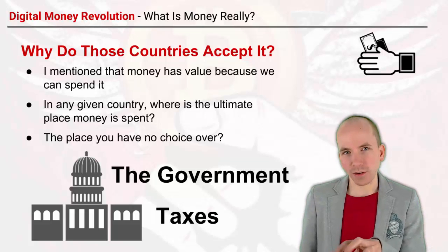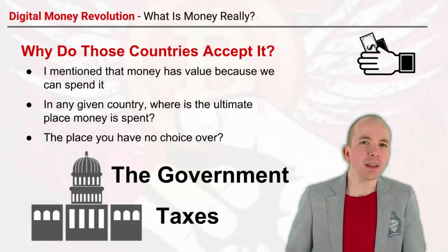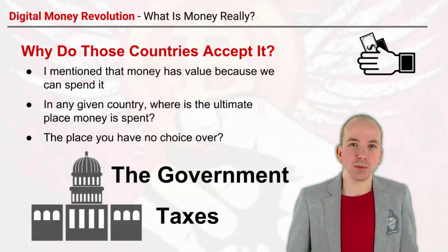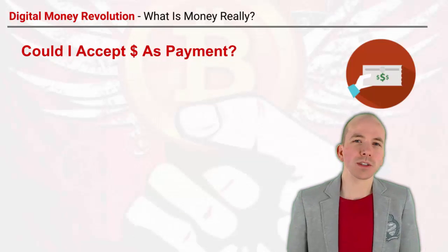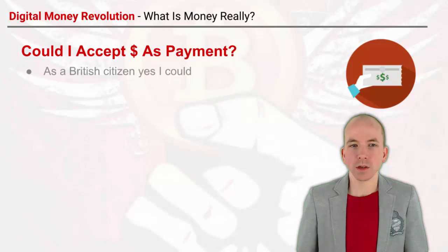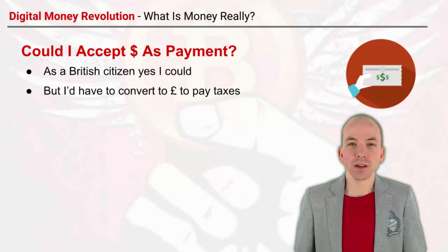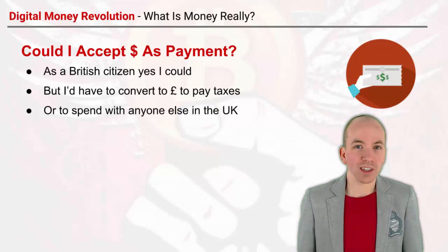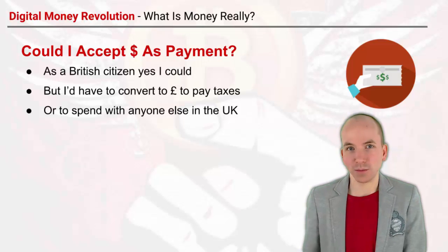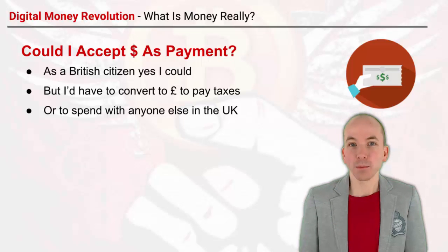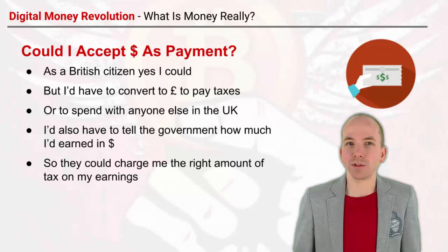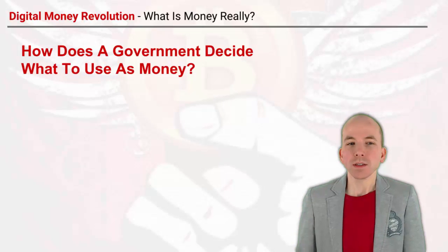Governments in each country have a stranglehold on what can be used as currency. They'll allow people to barter and trade in anything, but when it comes to paying taxes you have to have the national currency. As a British citizen, I could accept dollars as payment, but I'd have to convert some to pounds when it came time to pay taxes, or find someone else in the UK who'd accept dollars. If I couldn't find anybody, I'd have to change it back to British pounds. And I'd have to tell the government how much I earned in dollars so they could charge me the right amount of tax.